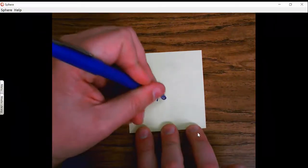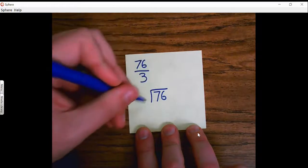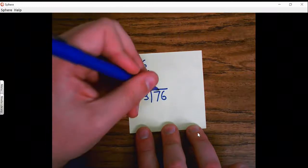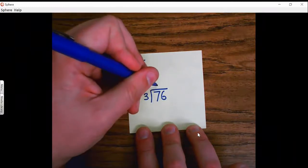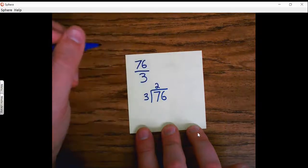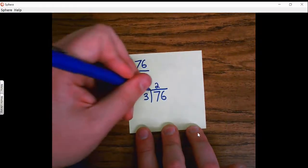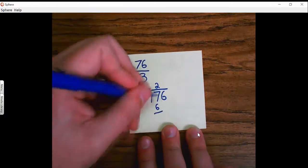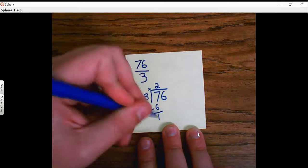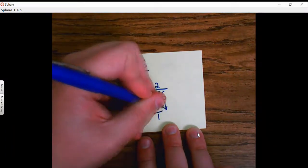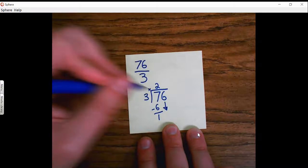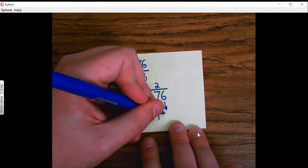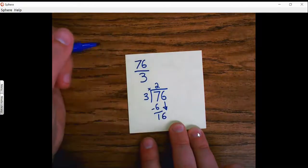I'm going to take my 76 and I'm going to divide that by 3. First I'll say how many groups of 3 can I take out of 7? Hopefully you said two groups of 3. Next, I multiply 3 times 2 is 6. 7 minus 6 is 1. Depending on how you do your division, you're either bringing down the 6 or bringing up the 1 next to the 6. Either way I end up with 16.